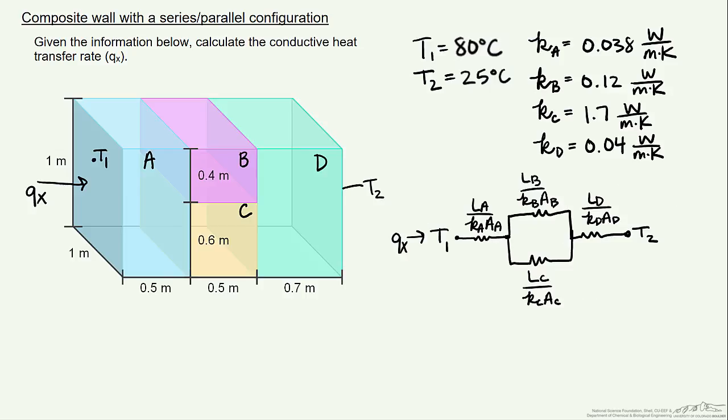Our thermal resistances are therefore going to be written such that our first one, L A divided by the thermal conductivity and its area. Then we'll look at the last one, L D divided by its thermal conductivity and area.